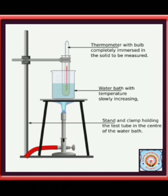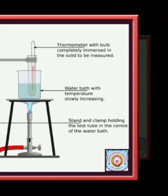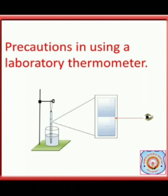The reading should be taken without removing the thermometer from its position, because in a laboratory thermometer the kink is absent. If we remove it, the mercury level decreases. So it is very essential to keep the thermometer in contact with the object. The eye of the observer should be at the same vertical level as the mercury in the capillary tube.